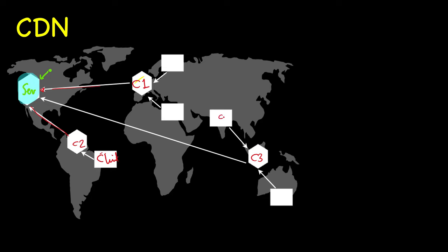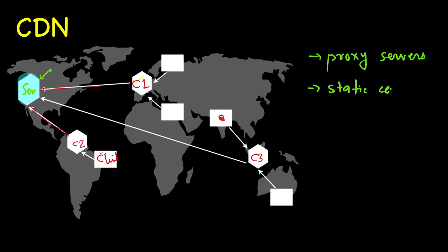Similarly, if a request is coming from another region, the nearest CDN server will serve it. CDNs are acting as proxy servers — they are not actual servers but proxy servers acting on behalf of the main server. They are globally distributed so that whenever a request comes, it will be served from the CDN server nearest to the user. CDNs are generally used for static files — files that are not changing and are the same for all users, such as images, videos, HTML, JS, or CSS files.